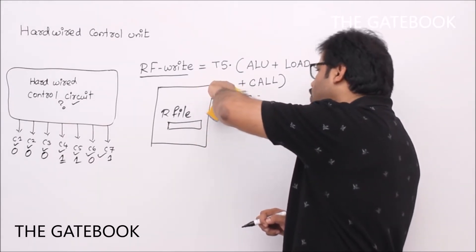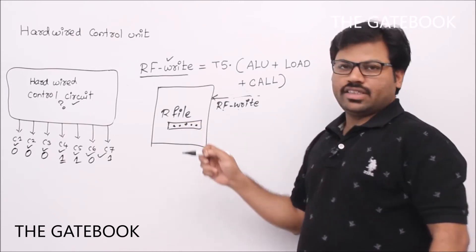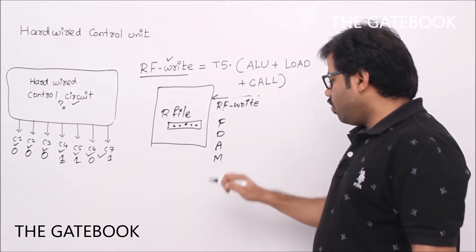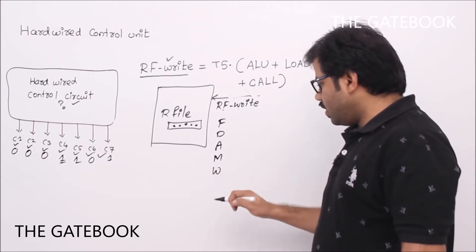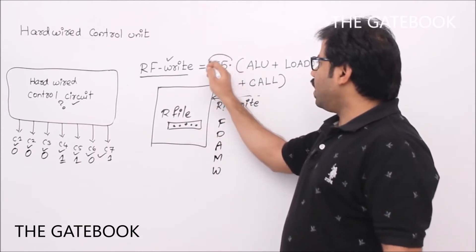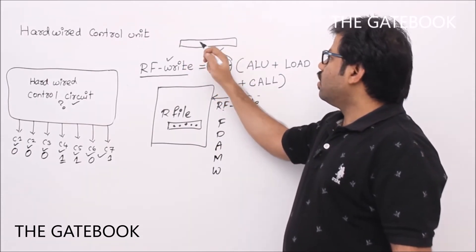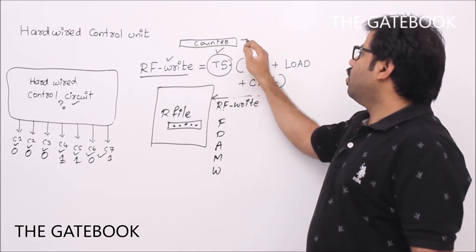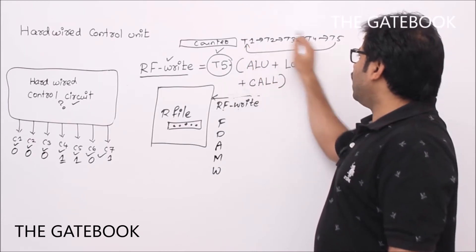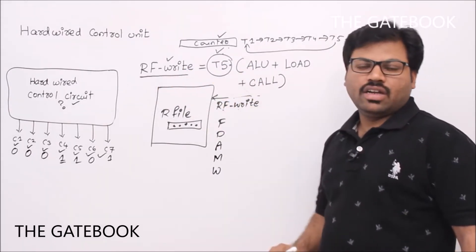When should RF write be 1? We will be writing something into the register only in the fifth stage — the write register stage. How many stages are there? Fetch, decode, ALU, memory, and the fifth is write. In the write stage, we write into the register. So when the clock cycle is at t5, that's when RF write should be enabled. There is a counter — that counter was generating patterns: t1, t2, t3, t4, t5, then back to t1. Whenever that counter generates t5, at that time only we enable RF write.